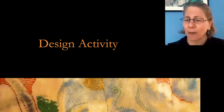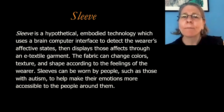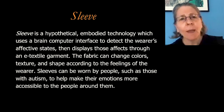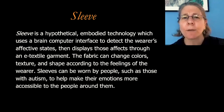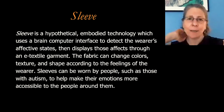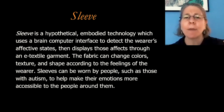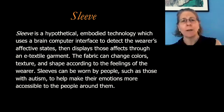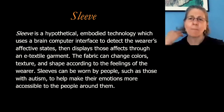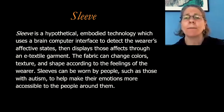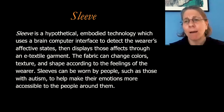This is one that one of my PhD students, Stephanie Ballard, and some others came up with. The name of this technology is Sleeve. Sleeve is a hypothetical embodied technology which uses a brain-computer interface to detect the wearer's affective states. Sleeve is this imagined technology connected at the base of the spine. It will detect emotions — affective state means emotions — and display those emotions through an e-textile garment. Imagine wearing a jacket connected to your brain, where the fabric can change colors, textures, and shape according to the feelings of the wearer.